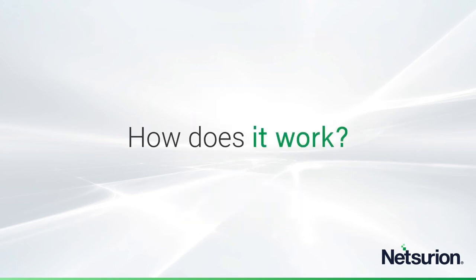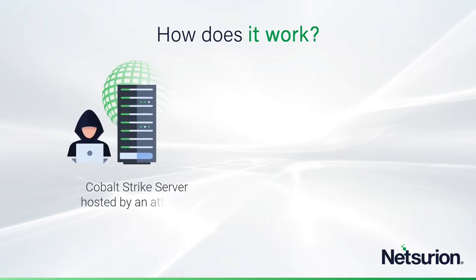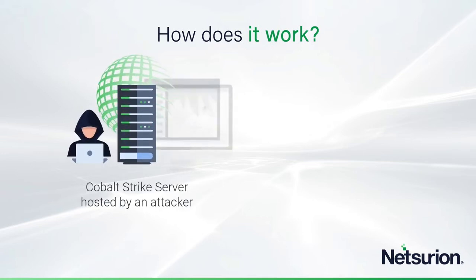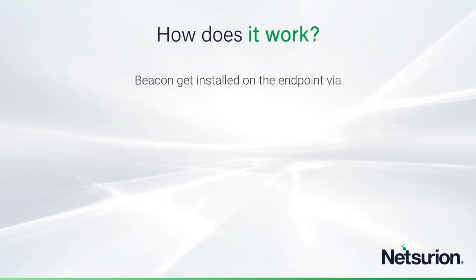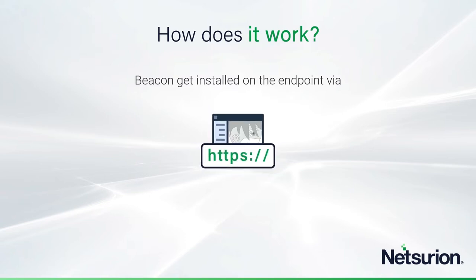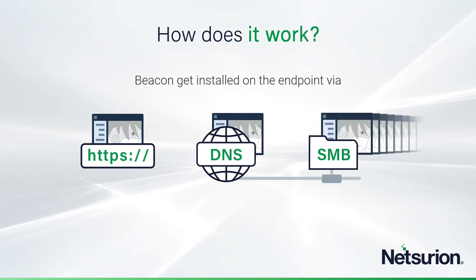So how does Cobalt Strike work? There are two parts to it: the Cobalt Strike server hosted by the attacker somewhere on the internet, and a beacon they try to deliver to your endpoint. All the traditional methods of delivering software to your endpoint are supported. For example, visiting a phony website hosting the beacon can deliver it via HTTP or HTTPS. If you were convinced to resolve a phony domain name, it can be delivered via DNS. If it's already inside your network, the Windows Server Message Block or SMB protocol can be used to distribute it further.